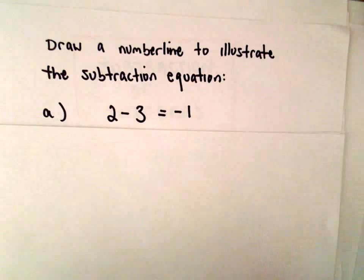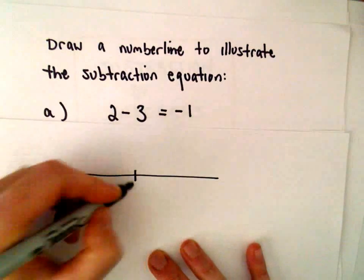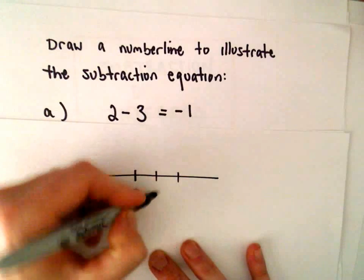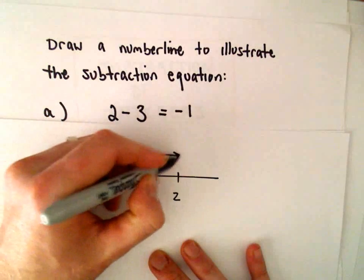So in part A, we've got 2 minus 3 equals negative 1. Well, in terms of our number line, the first number we have is positive 2. So I'm going to go 2 units to the right.